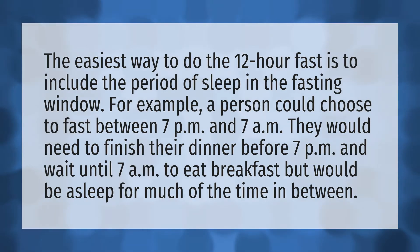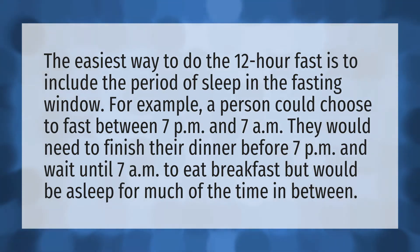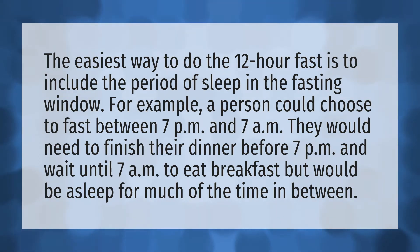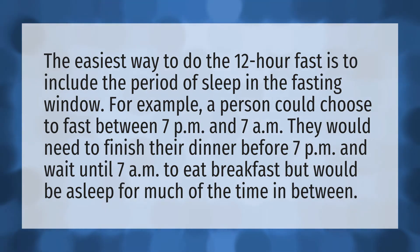The easiest way to do the 12-hour fast is to include the period of sleep in the fasting window. For example, a person could choose to fast between 7 p.m. and 7 a.m. They would need to finish their dinner before 7 p.m. and wait until 7 a.m. to eat breakfast, but would be asleep for much of the time in between.